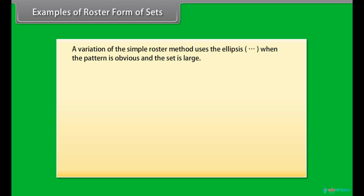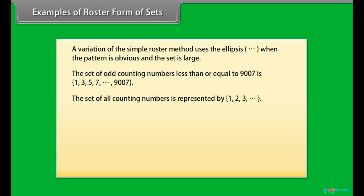Examples of roster form of sets. A variation of the simple roster method uses the ellipsis when the pattern is obvious and the set is large. The set of odd counting numbers less than or equal to 9007 is 1, 3, 5, 7 up to 9007.